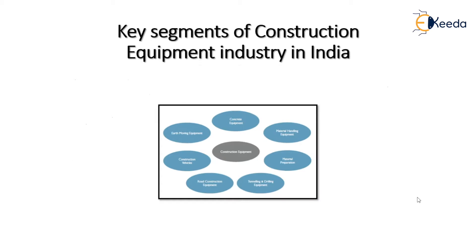Now we will look at the key segments of the construction equipment industry in India. There are seven key segments: earth moving equipment, concrete equipment, material handling equipment, material preparation equipment, tunneling and drilling equipment, road construction equipment, and construction vehicles equipment.